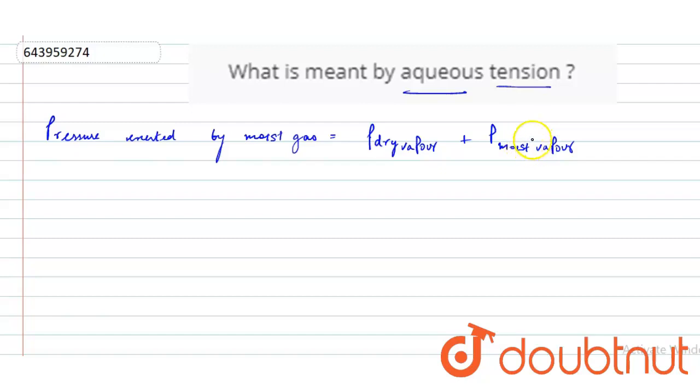This partial pressure exerted by water vapor, this whole pressure exerted by water vapor, is called aqueous tension. Thank you, class.